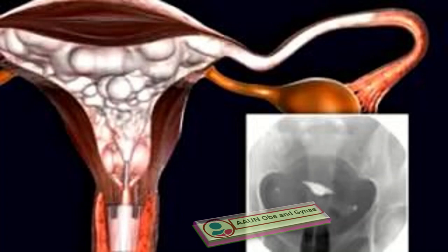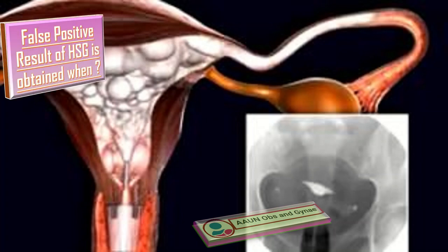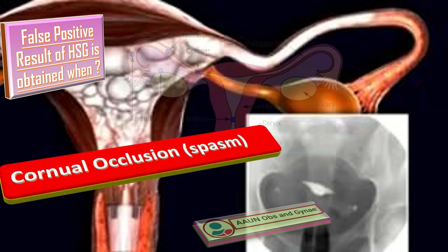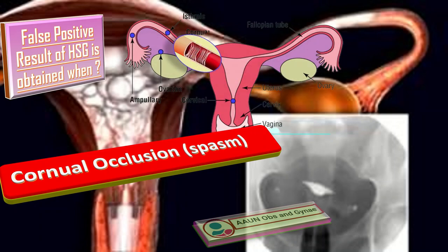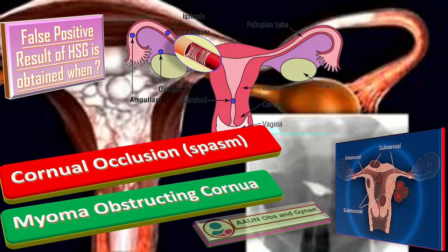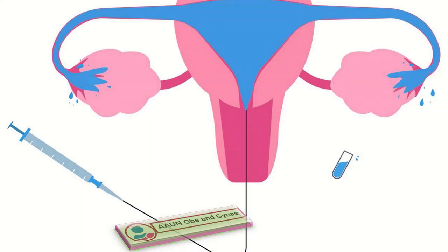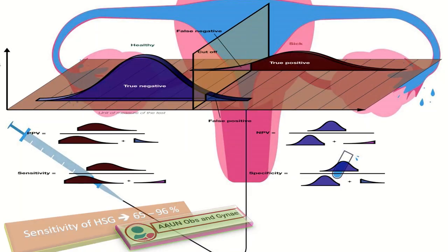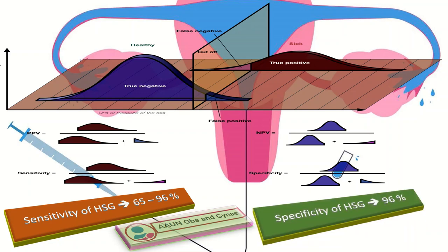For these three conditions, we expect to see tubal blockage on HSG. False positive results occur when there is corneal occlusion or spasm, or when a myoma is obstructing the cornua — in that case we also get a false positive result on HSG.